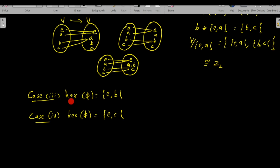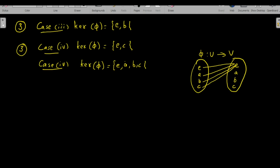Similarly, in Case 3 where kernel of φ = {e,b}, by the same argument there are three different homomorphisms possible. And in Case 4 where kernel of φ = {e,c}, another three homomorphisms are possible.